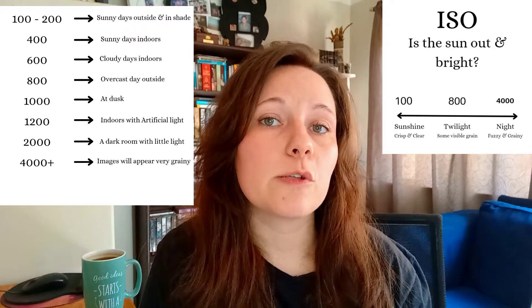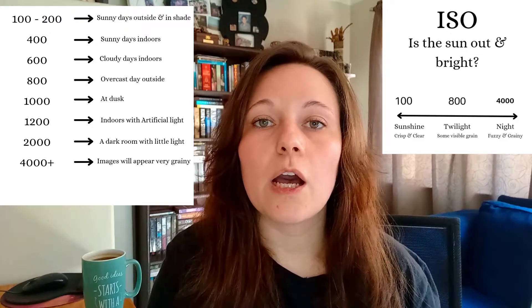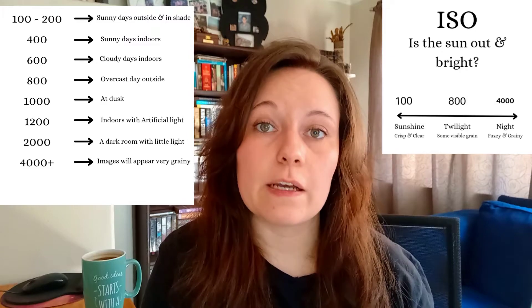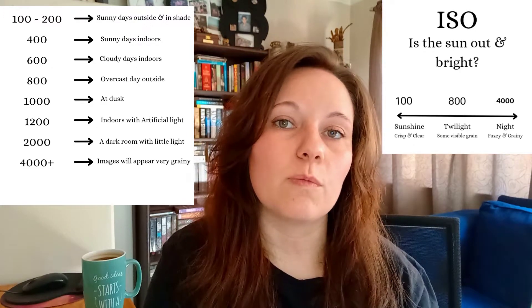So when to use a high ISO and when to use a low ISO? ISO 100 to 200 is for sunny outside or outside in the shade. Around 400 is for a sunny day but taking photos inside. Around 600 is for an overcast day shooting outside. Around 1000 to 1200 is for inside with artificial light. Around 2000 is for a dark room with little light, and anything above 4000 your images will appear very grainy. Between 100 to 800 your photos will be crisp and clear; 800 to 3200 there will be some visible grain or noise; and anything after that your photos will become fuzzy and full of noise.